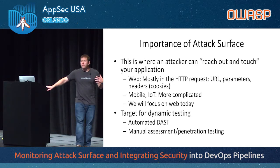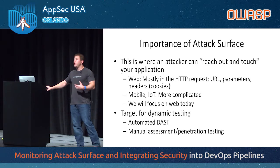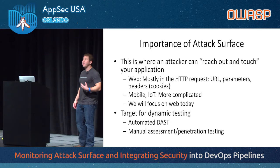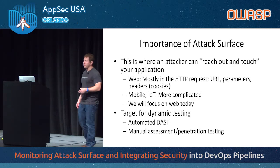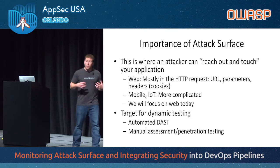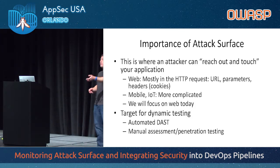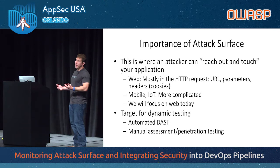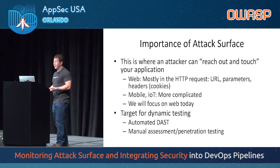Attack surface is really important from the standpoint of how do I do my dynamic testing — both automated dynamic testing as well as manual assessment or penetration testing. The question is: what is the behavior of this running application? How can I reach out and touch this application, change inputs in order to change behavior, and as a result identify and find vulnerabilities associated with that?